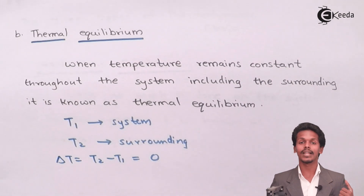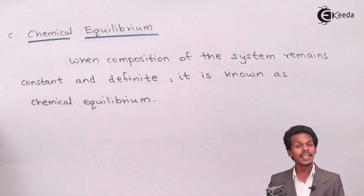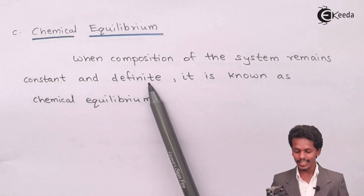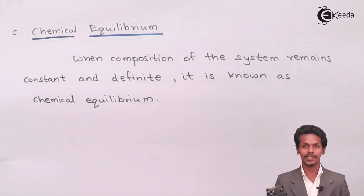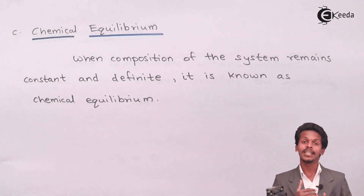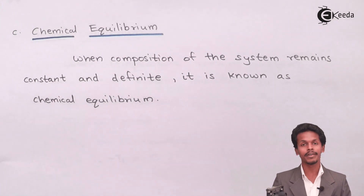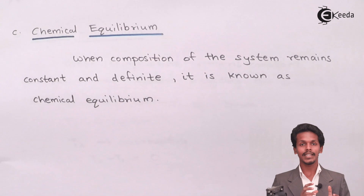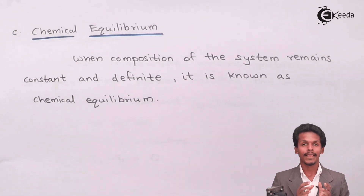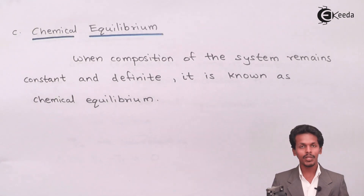The third type is chemical equilibrium — when the composition of the system remains constant and definite, it is known as chemical equilibrium. If the variables like pressure, volume, and temperature are not altered, then the chemical composition of the system also won't change. An equilibrium where there is no change in chemical composition or chemical reaction is called chemical equilibrium.